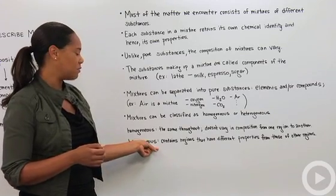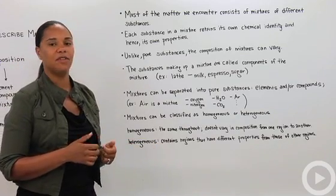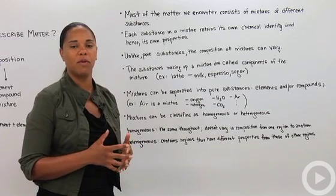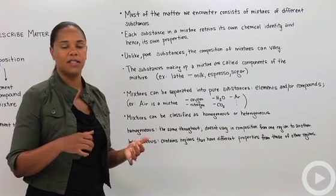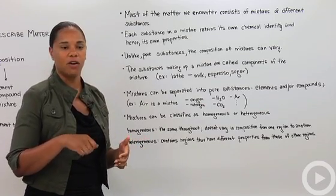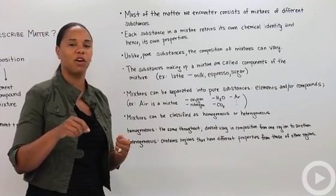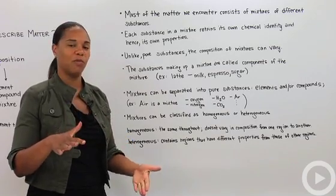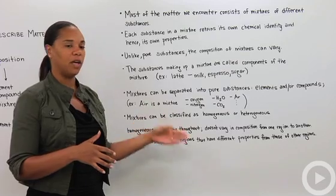A heterogeneous mixture contains regions that have different properties from each other, meaning it's not uniform in nature. For example, if you poured sand into water and mixed it up for a couple of minutes, there would be sand swirling around and then both components would become separated from each other — therefore it would be a heterogeneous mixture.